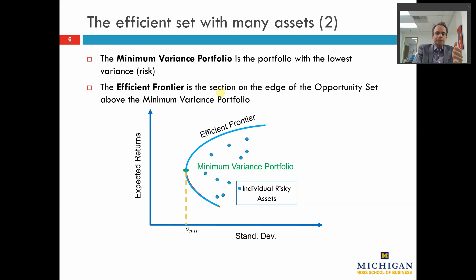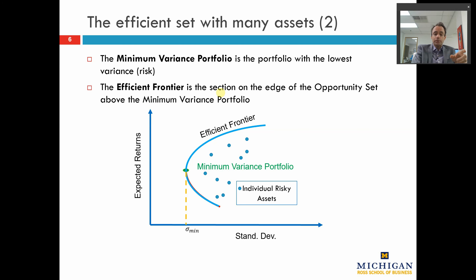Of course, in reality, investors have different views on what assets are going to do well and what assets are going to do poorly. But those different views aren't factoring into our analysis here, because one of the assumptions of the capital asset pricing model is that all investors have the same information set and the same expectations for the expected return on each asset, the correlation of returns between pairs of assets, and the volatility of returns on each individual asset. The volatility of a portfolio is entirely determined by the weight of the assets in the portfolio, the correlation of returns between pairs of assets, and the standard deviation of returns on each individual asset — all the components of our portfolio variance matrix from the previous class. If we all agree on the inputs into that matrix, we all come up with the same efficient frontier.